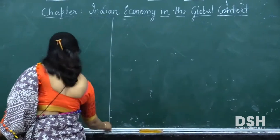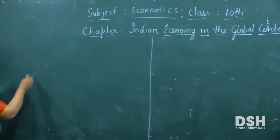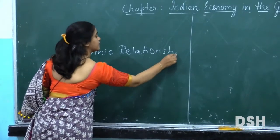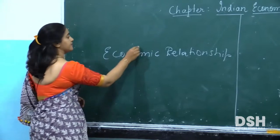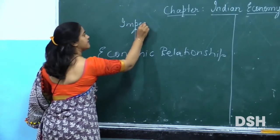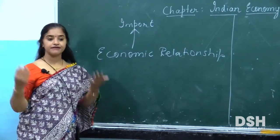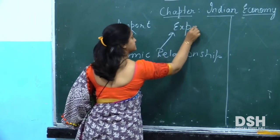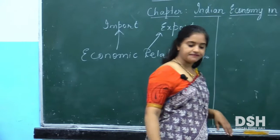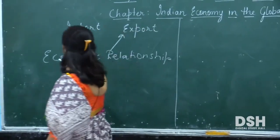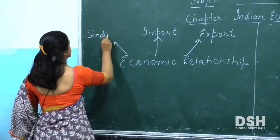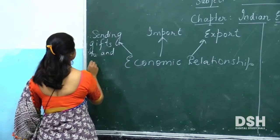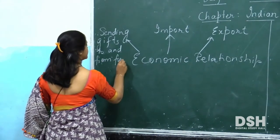Let us start with some examples. Can you tell me where do you find economic relationships around the world? India's economic relationship means what — it may be in the form of import, wherever there is a dealing with cash or finance. So it is in the form of import, then export. What else? Sending gifts — when you send gifts, that is also an economic relationship, sending gifts to and from foreign countries.